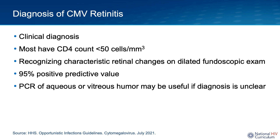If the diagnosis is unclear, the ophthalmologist may perform PCR of the aqueous or vitreous humor. The PCR is performed on a specimen obtained by the ophthalmologist doing an anterior chamber tap, and detection of CMV DNA from vitreous or aqueous humor specimens is highly suggestive that CMV is the cause of the ocular disease.